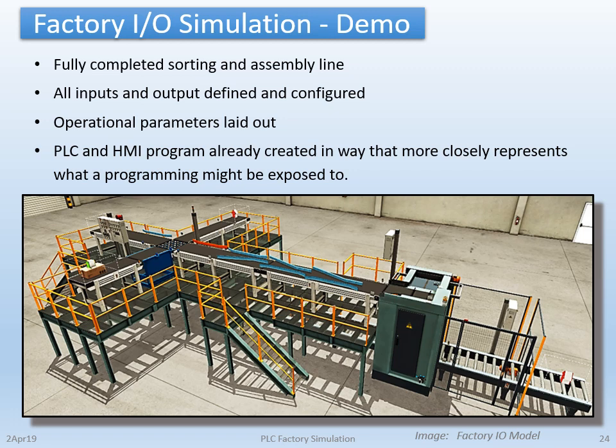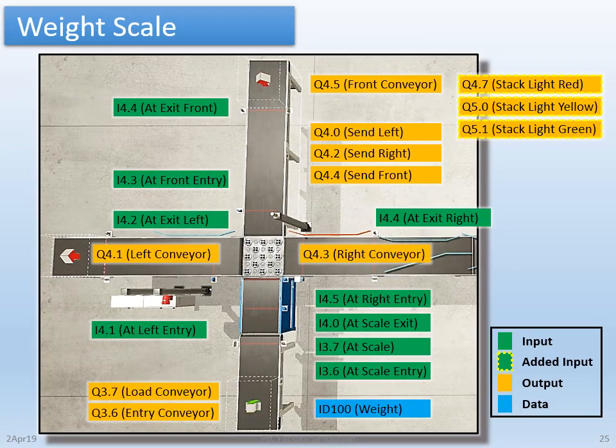Now this is all in line with Universal Design for Learning concepts briefly noted at the beginning of this presentation. Here is an overhead view of the weight scale scene. The green tags indicate standard inputs, whether it's a proximity switch, an optical retroreflector or diffuse sensor. The outputs are shown in orange, including the motors for the conveyors, the direction of the sorting ball table, and the stack pole light. The blue is the word containing the weight output of the scale.